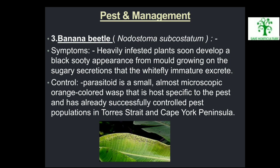Third pest — Banana Beetle (Nodostoma subscoestatum): Symptoms: Heavily infested plants soon develop a black sooty appearance from mold growing on the sugary secretions that the whitefly immatures excrete. Control: A parasitoid — a small, almost microscopic orange-colored wasp — is host-specific to the pest and has already successfully controlled pest populations in Torres Strait and Cape York Peninsula. Symptoms of banana beetle are visible in the picture.